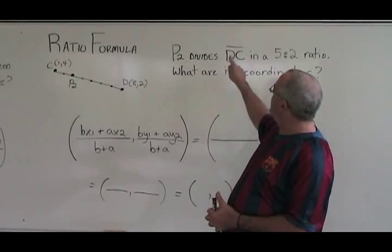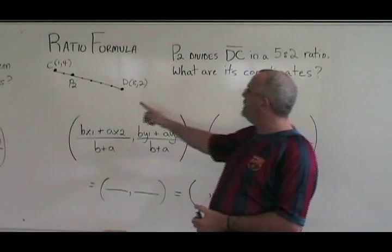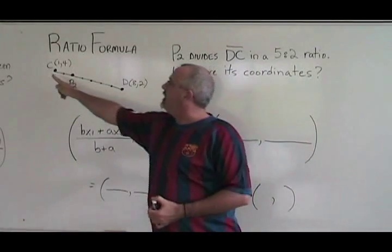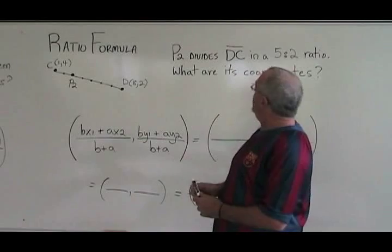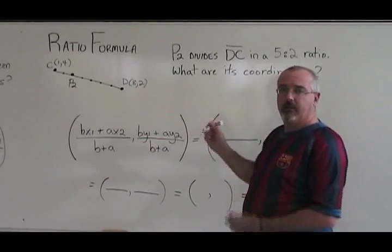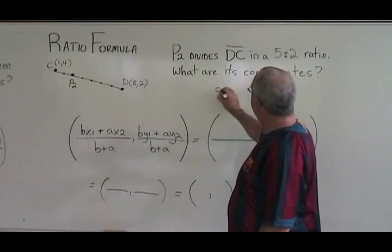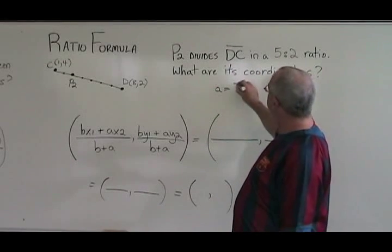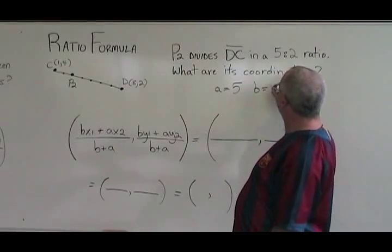Remember, we are talking about segment DC, which means our starting point is D and our ending point is C. We are given a ratio. We do not have to calculate the ratio. It means we are given our little a, it's equal to five. And we're given our little b, which is equal to two.